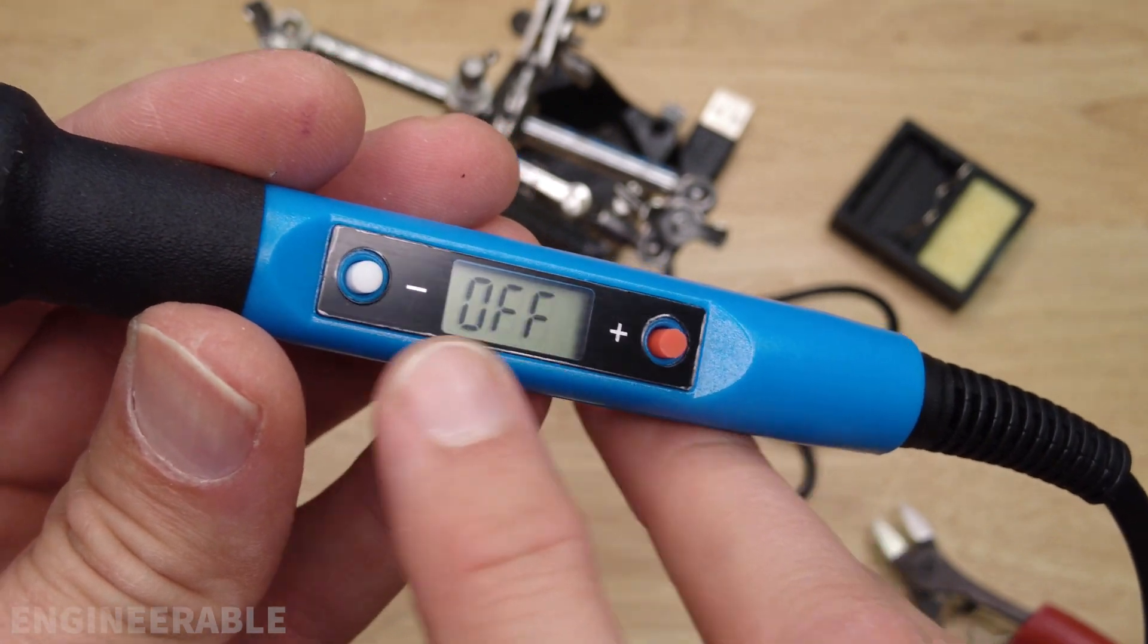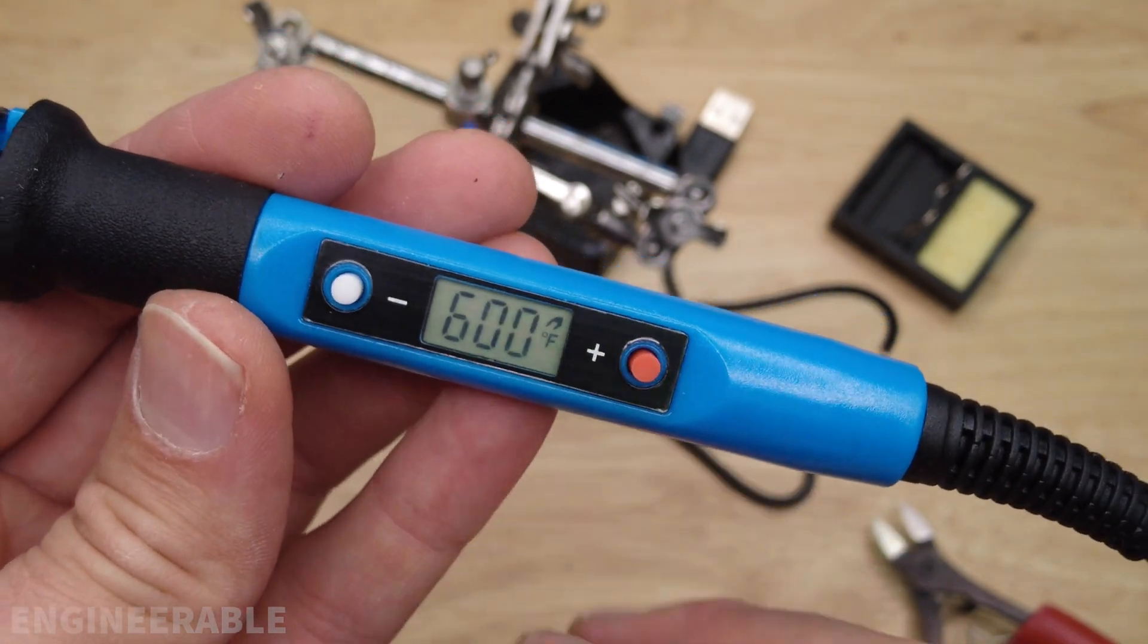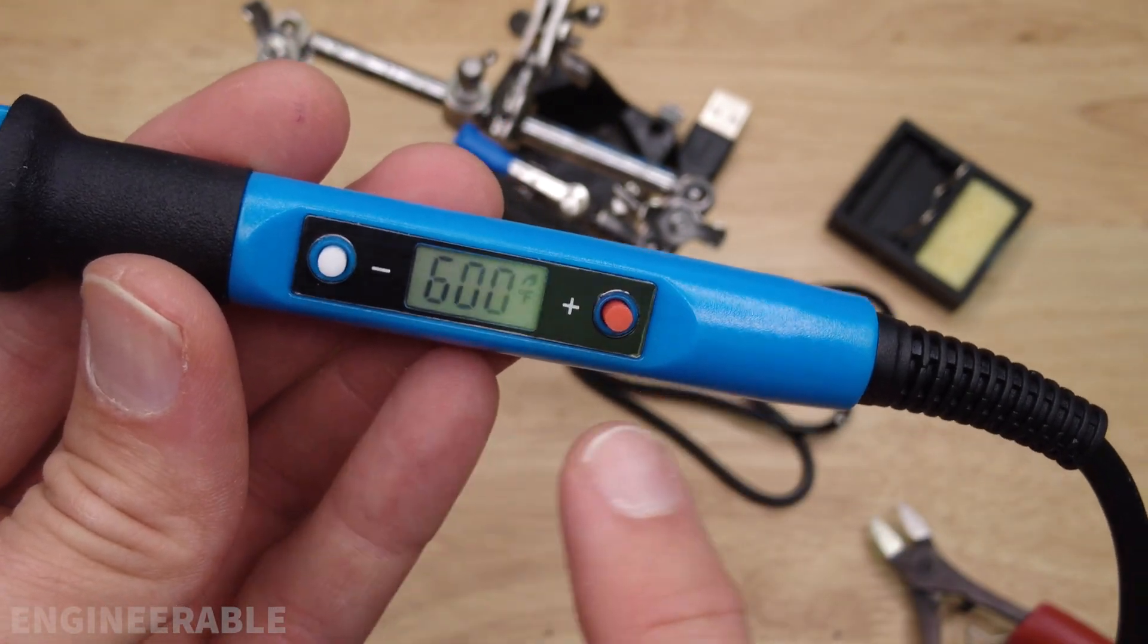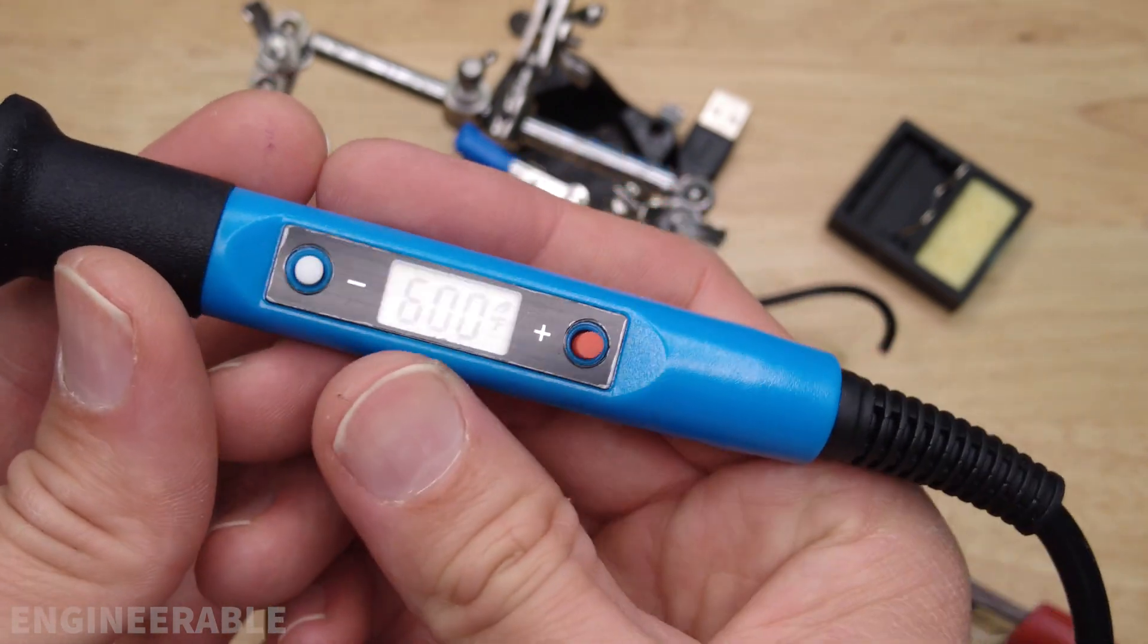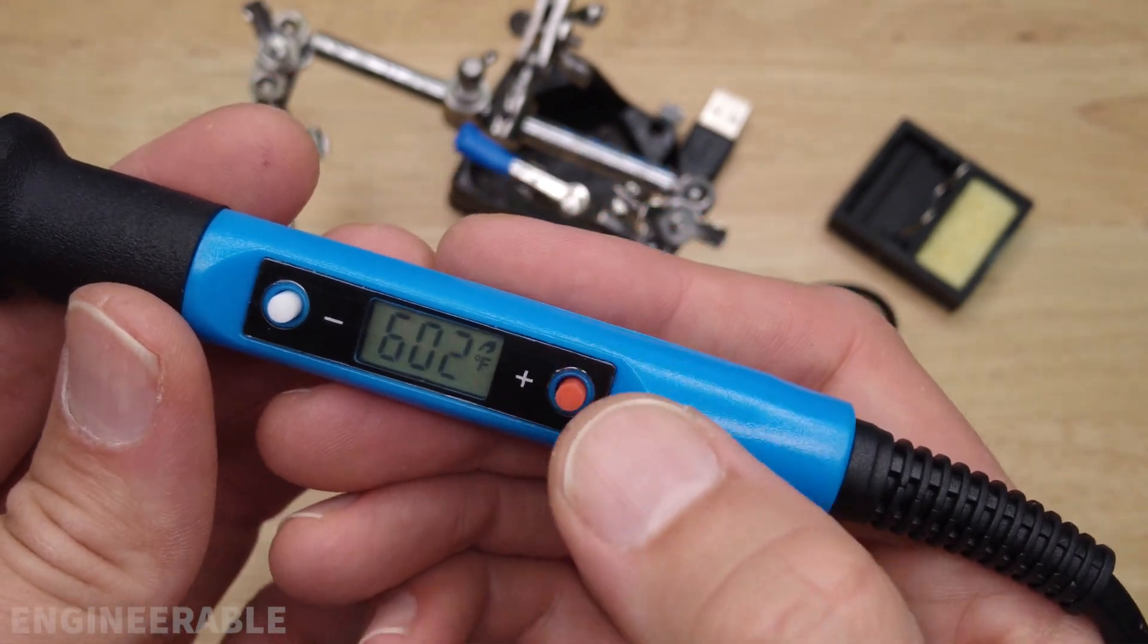This soldering iron does have an auto-off feature. So it turns itself off after about five minutes, but it also seems to turn itself back on when you handle it. So you don't have to push a button to turn it back on.